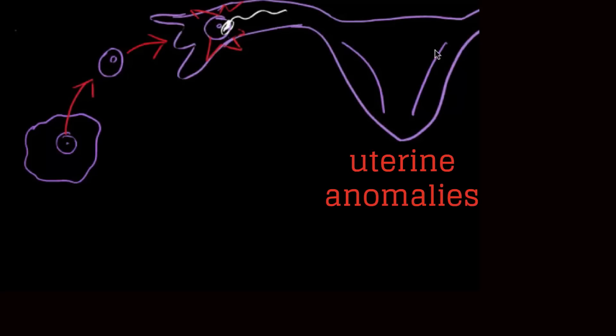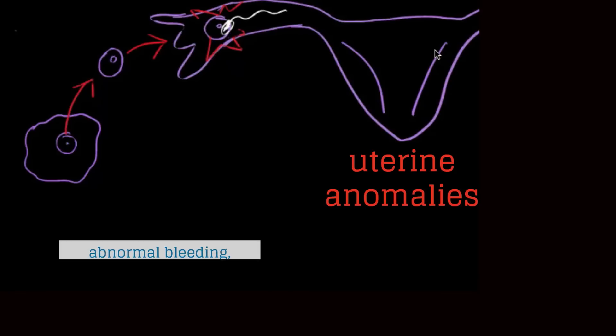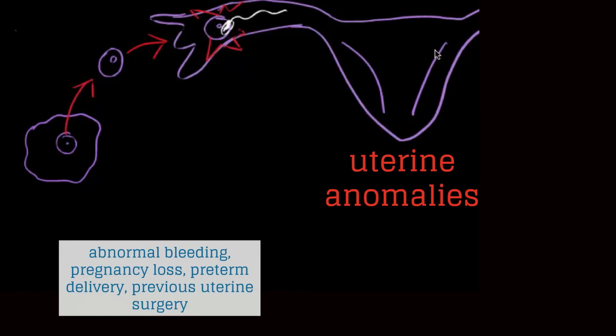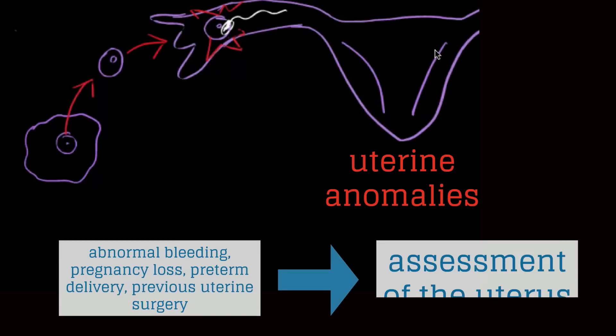Uterine anomalies are surprisingly uncommon causes of infertility. If there is a history of abnormal bleeding, pregnancy loss, preterm delivery, or previous uterine surgery, then assessment of the uterus is important.